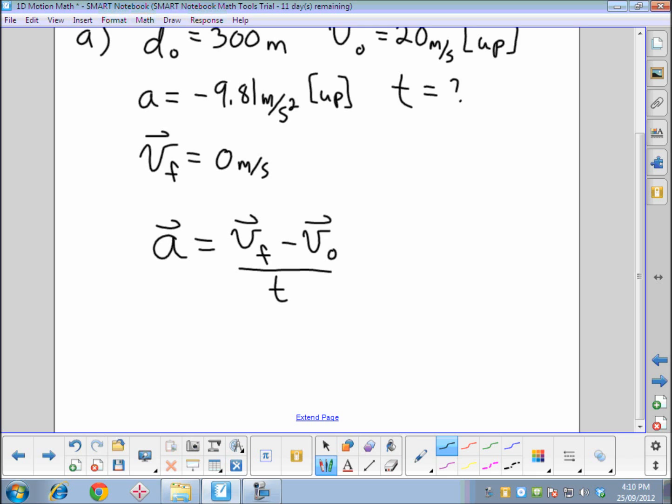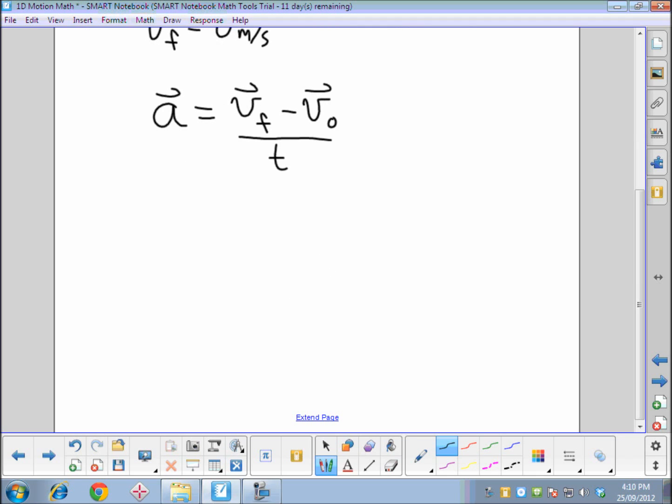So putting our values in, acceleration negative 9.81, and that equals our final velocity, 0 minus the initial, 20, divided by time.